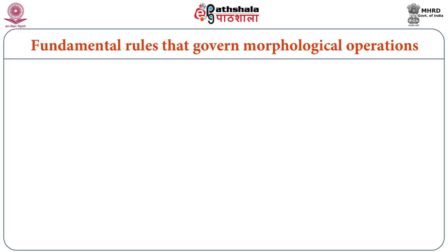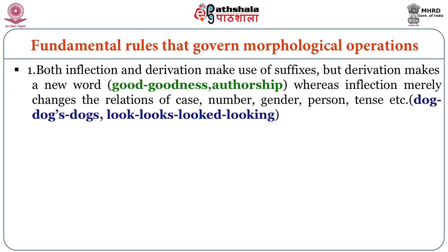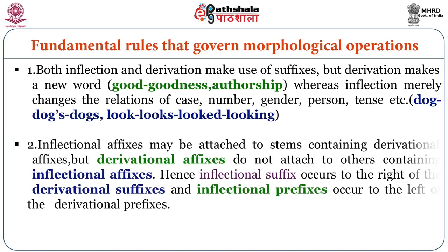Both inflection and derivation make use of suffixes, but derivation makes a new word — like 'good' becomes 'goodness' or 'authorship' — whereas inflection merely changes the relations of case, number, gender, person, tense, etc. For example, 'dog' becomes 'dogs'; 'look' becomes 'looks,' 'looked,' 'looking.' Inflectional affixes may be attached to stems containing derivational affixes, but derivational affixes do not attach to stems containing inflectional affixes. Hence, inflectional suffixes occur to the right of derivational suffixes, and inflectional prefixes occur to the left of derivational prefixes.